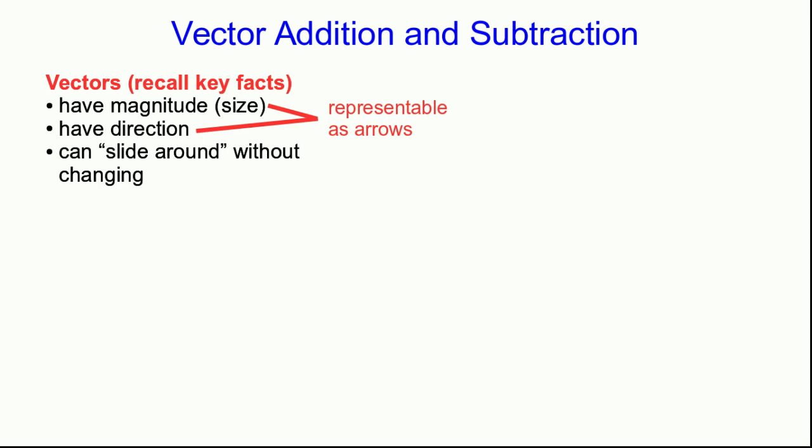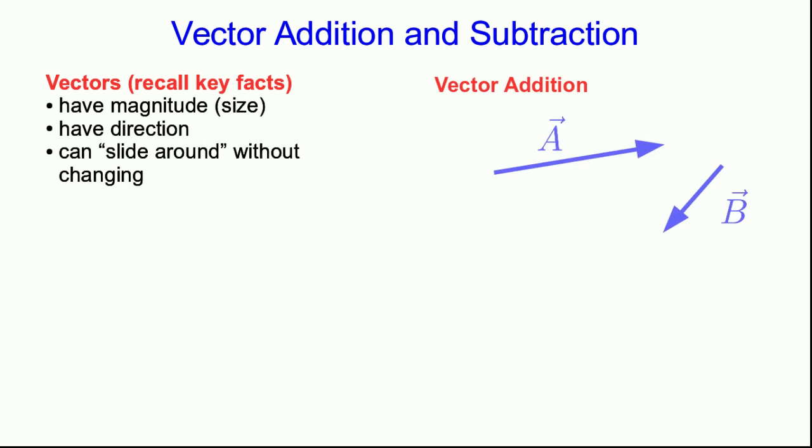Anything you can do with arrows is a valid thing to do with vectors. So let's look at addition of vectors using the representation of them as arrows. So here are two arbitrary vectors. What does it mean to add them?